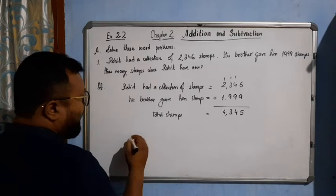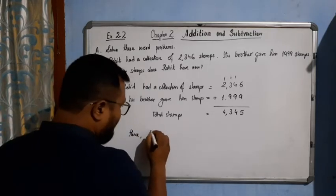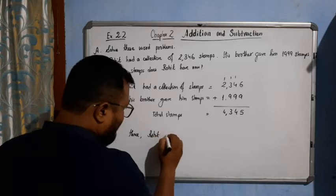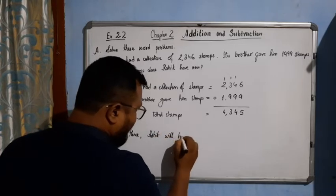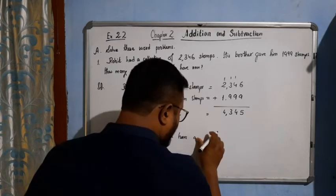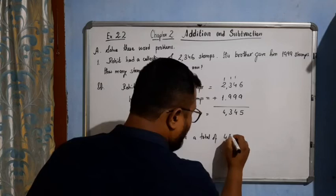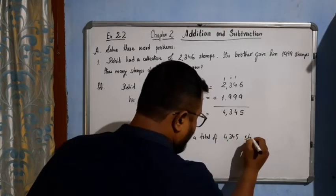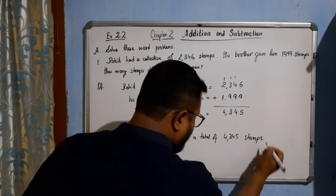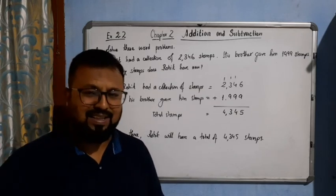So, ultimately we will write. Hence, Rohit will have a total of 4,345 stamps. So, it's very easy. I hope you have understood this math very nicely. Thank you.